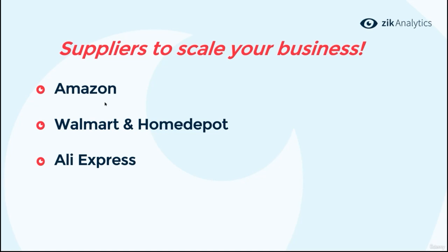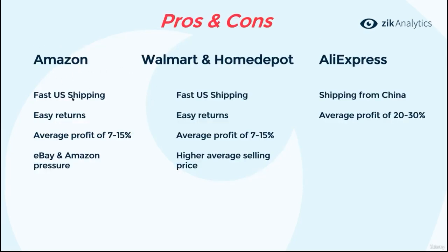One is Amazon — you can continue and scale your business with Amazon. Two is Walmart, and three is Home Depot. We put them together because sellers usually combine both into one store. The pros of Amazon include fast U.S. shipping and easy returns. The average profit is 7% to 15%, which is the same as Walmart and Home Depot — this is the average profit for working with local suppliers.